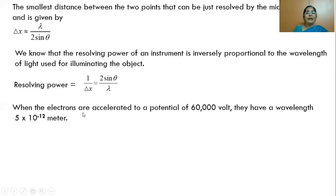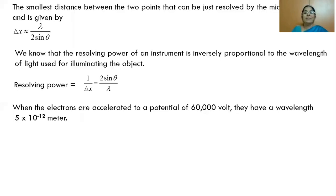When electrons are accelerated to a potential of 60,000 volts, they have a wavelength of 5 into 10 to the power minus 12 meters. We know lambda equals h by mv, which can also be written as lambda equal to h by square root of 2meV, where V is the potential difference. Applying 60,000 volts in that formula gives a wavelength of 5 into 10 to the power minus 12 meters.